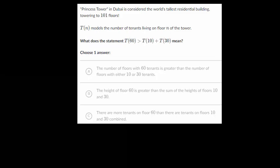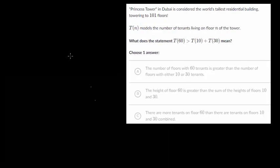The first step here is to figure out what these letters actually represent. Let me make a little bit of space and we can write this down. So we have T of N and we have N. Now T of N models the number of tenants living on floor N of the tower. So it looks like N is representing which floor of the tower we're talking about.